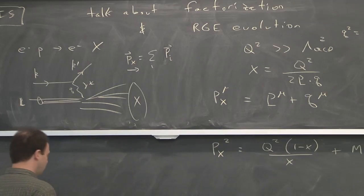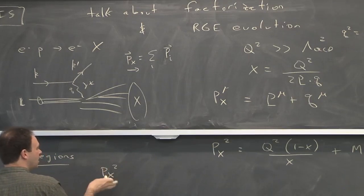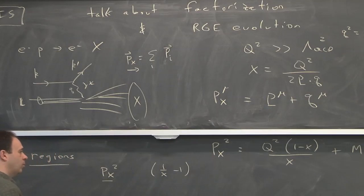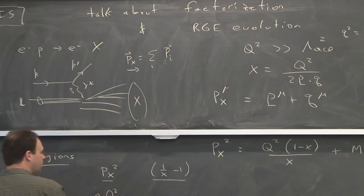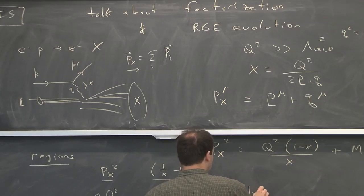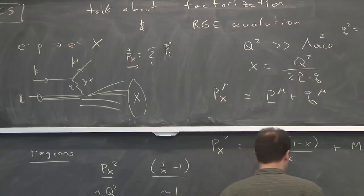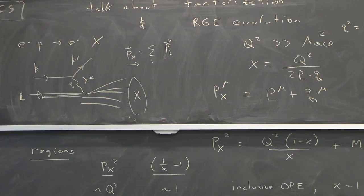And so there's actually different regions of DIS. And we're only going to talk about one of them. But I have to enumerate what I'm talking about carefully. And I can do that by looking at P_x squared, or this factor 1 minus x over x, which I'll call 1 over x minus 1. If this thing is of order Q squared, then that means that this thing you're counting is of order 1. And in that case, it's what's called the inclusive operator product expansion. So this is the case that most books would deal with.